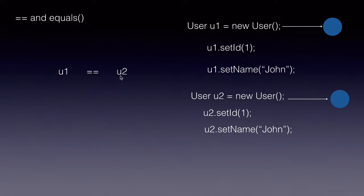So you can call it a shallow comparison and not a deep comparison. Now if you use the equals method u1 dot equals u2, the equals method is available for every Java class from the object class. Every class implicitly extends the object class.